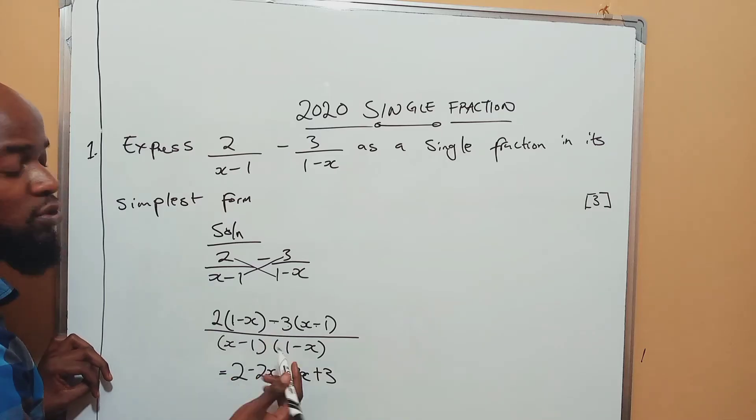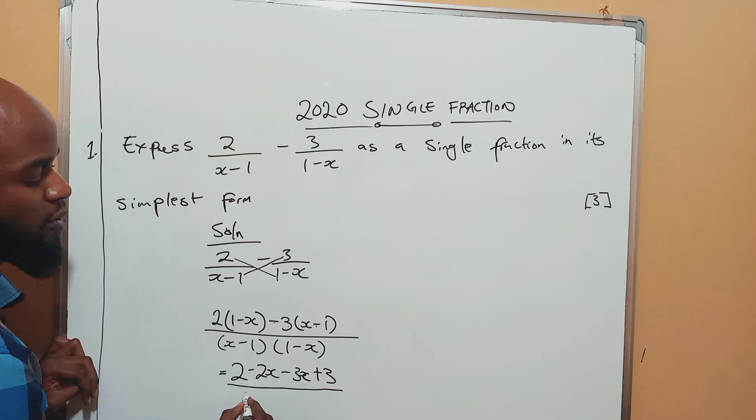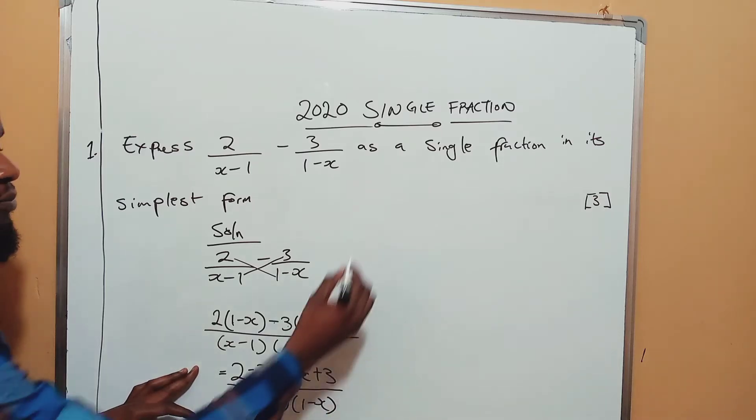Most people are going to get confused with the negatives, but knowing you, it's not going to be you. So it will be x minus 1, 1 minus x.